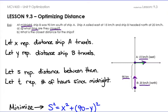I have a bunch of let statements. Let X represent the distance ship A travels. Let Y represent the distance ship B travels. Let S represent the distance between them, because that's what we're trying to find the equation for. The distance between them will be the hypotenuse of a right-angle triangle.